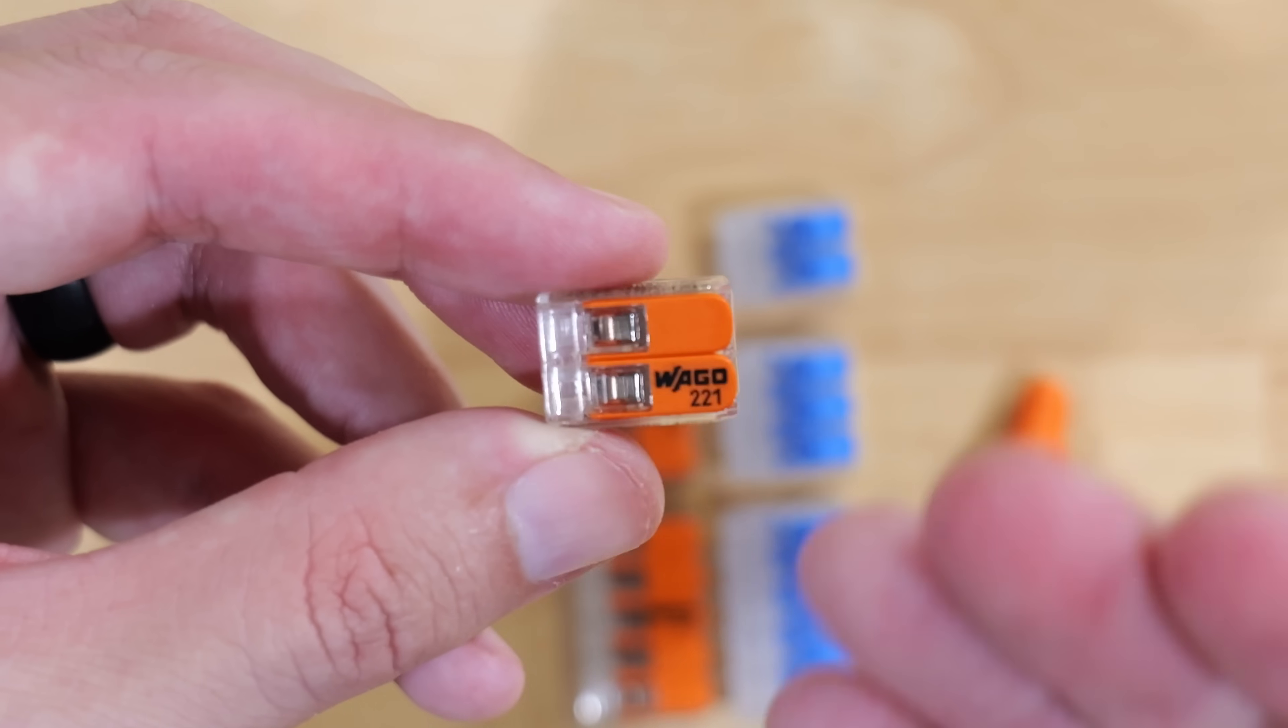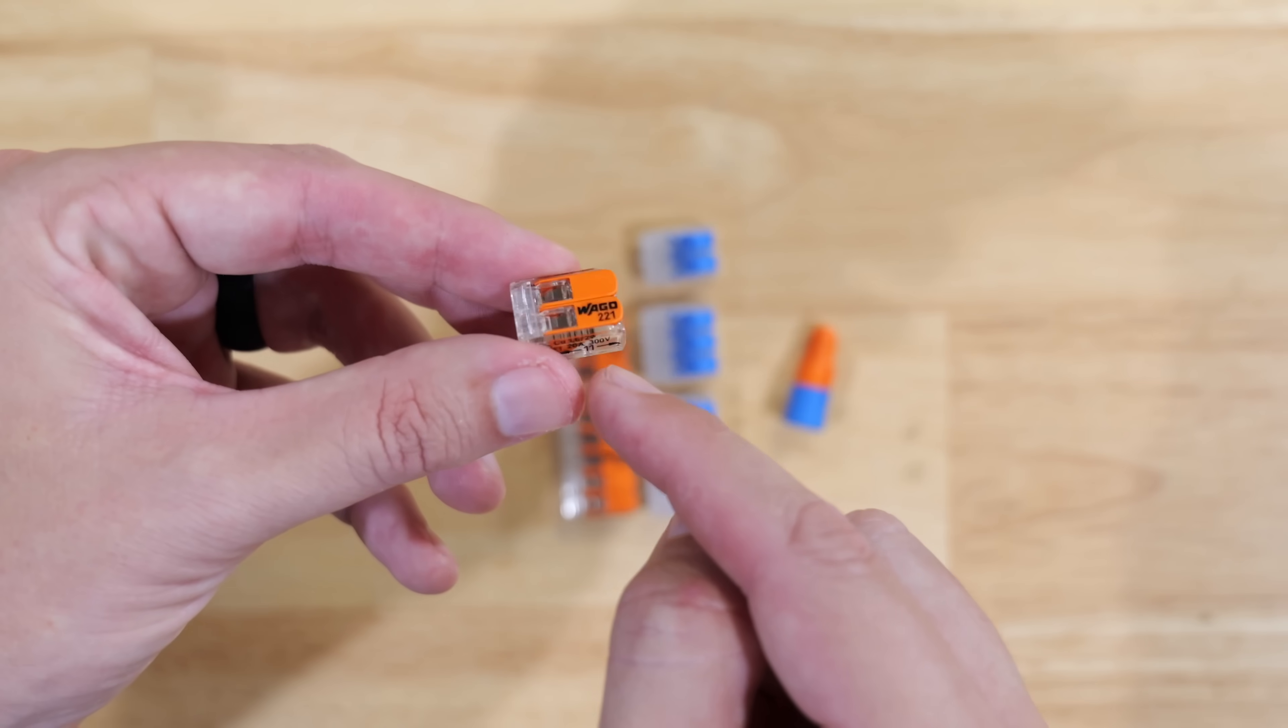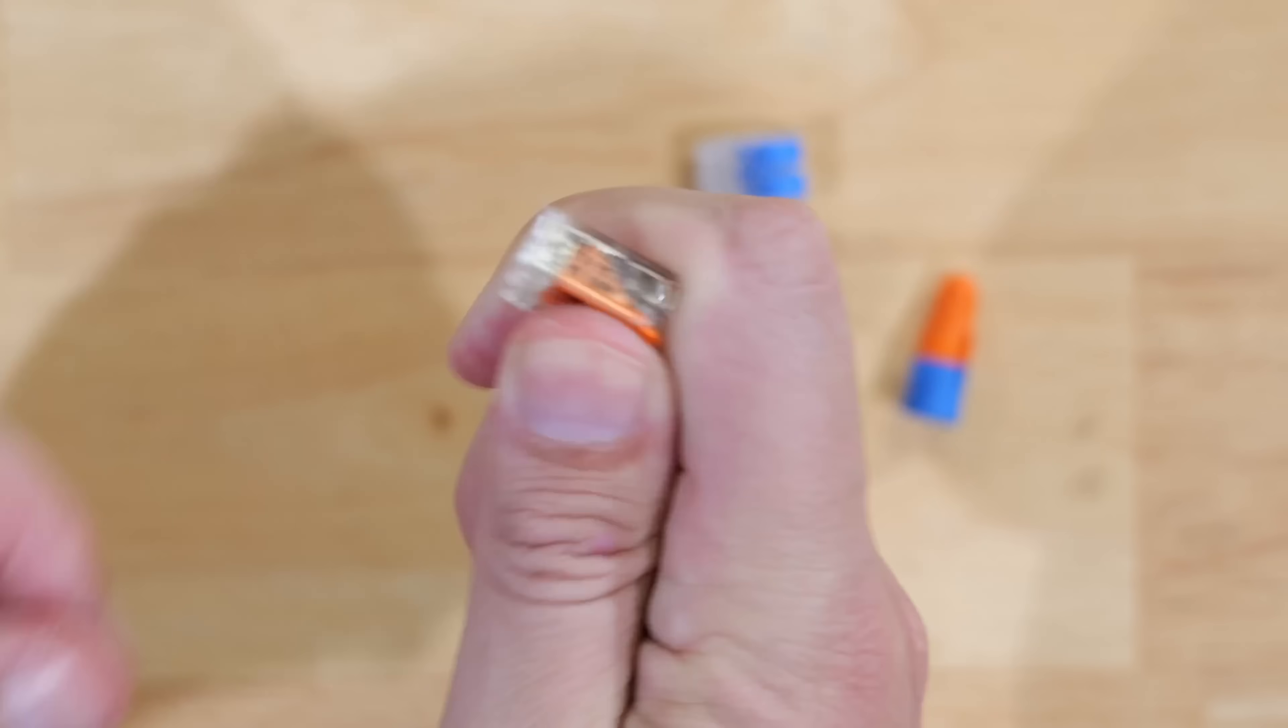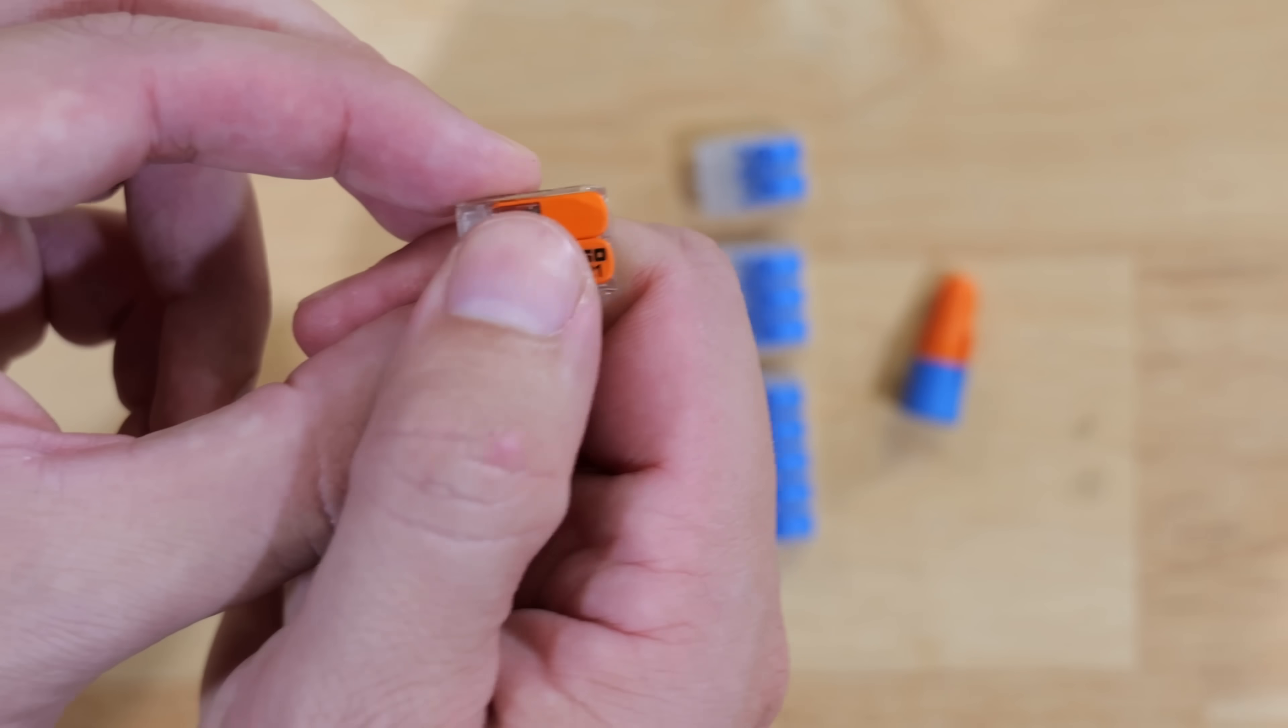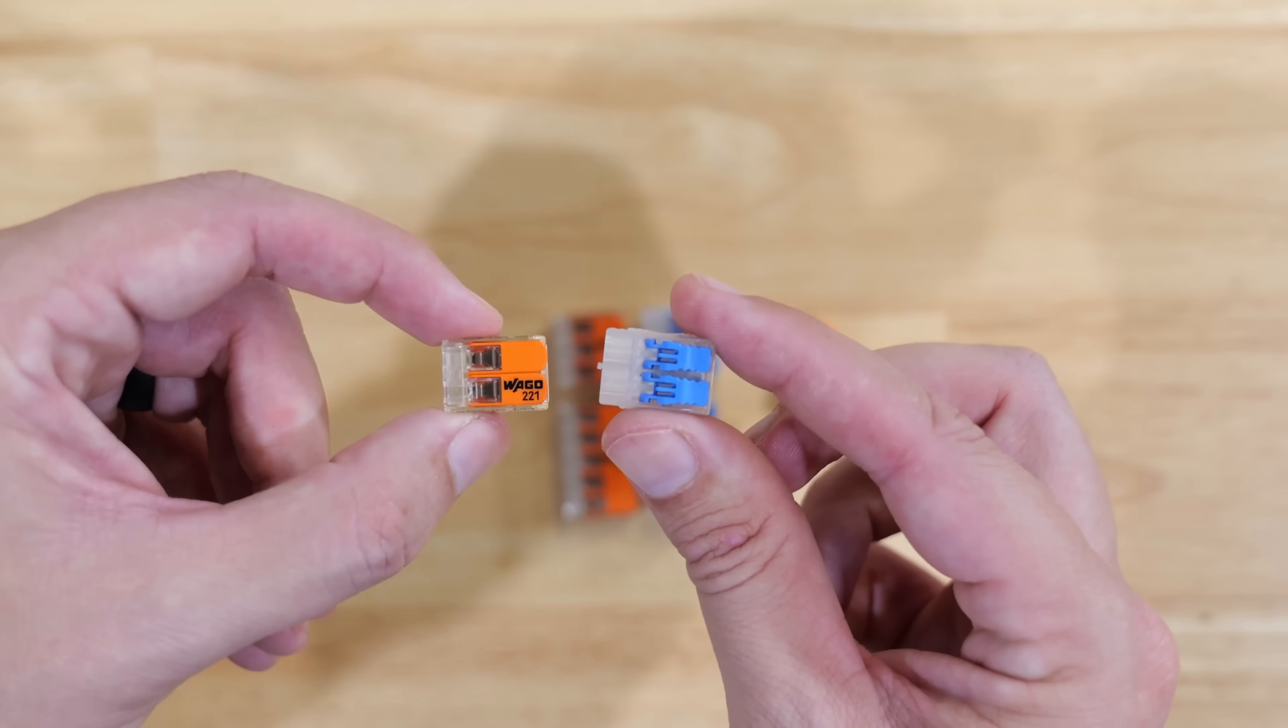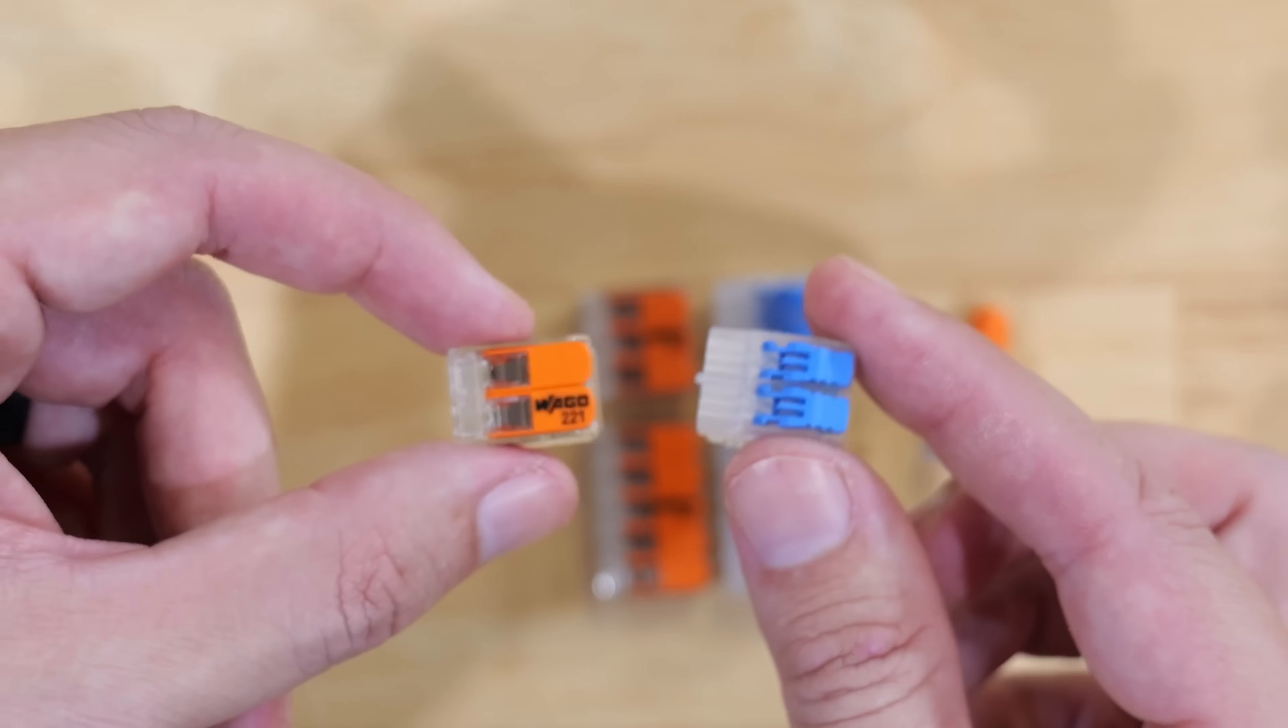When we go back to the WAGO here, it's really on the installer. It's the installer's fault if this was to get flipped up. A couple of things that you can do to make sure that doesn't happen: you could take a little piece of electrical tape and wrap it around the lever so they can't be flipped up, or what I tend to do is when I go to push these into the back of the box, I actually put my thumb over those levers. Until I get those wires and the connector seated where I want it in that box, I make sure that I keep my thumb on those levers so they cannot be opened at all.